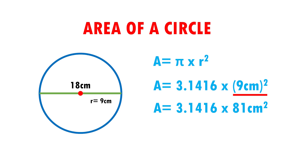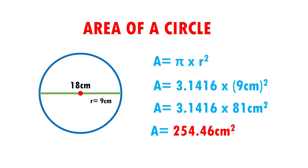Now, to get the area, I just have to multiply. A equals 3.1416 times 81, and it gives me 254.46. This means that this circle will fit 254.46 squares of 1 centimeter per side.